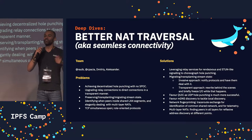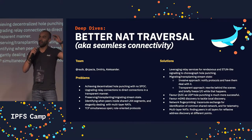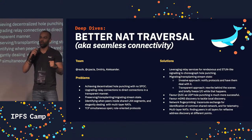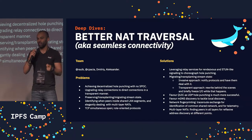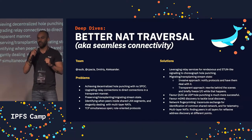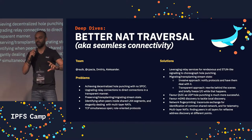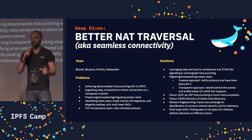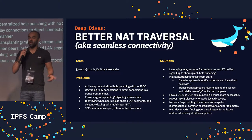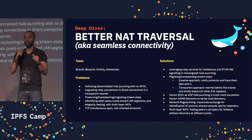Another way to open up ports in a NAT is by using UPnP or NAT-PMP, which means you're interacting with the router and telling it you need a port mapping. But there is a space in the middle: you find a peer in the network you want to interact with.